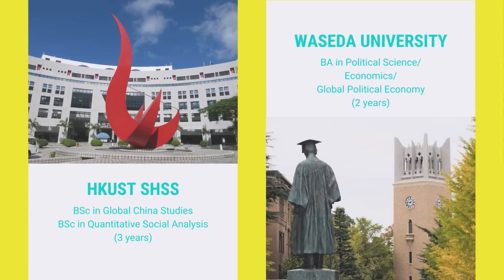Our school also has a partnership with Waseda University in Japan, and we collaborate with them to offer a dual degree program to our undergraduate students. Students in this program spend three years to complete their undergraduate studies in the School of Humanities and Social Science at HKUST, and then go to Waseda for two more years of bachelor studies. Students end up obtaining two bachelor's degrees — one from HKUST School of Humanities and Social Science, and one from Waseda University — all within five years.